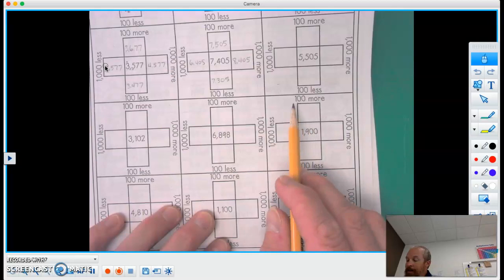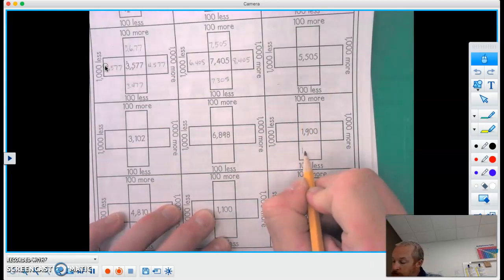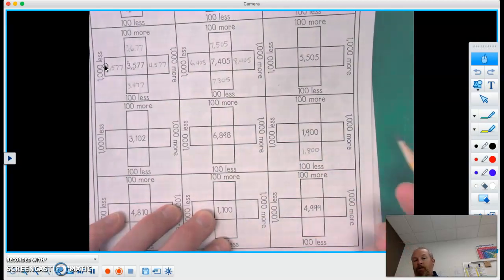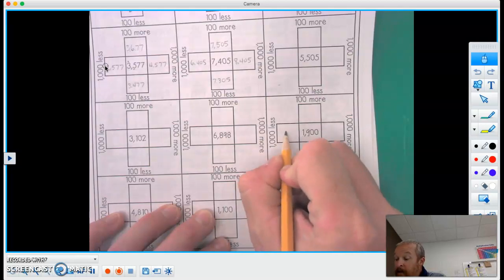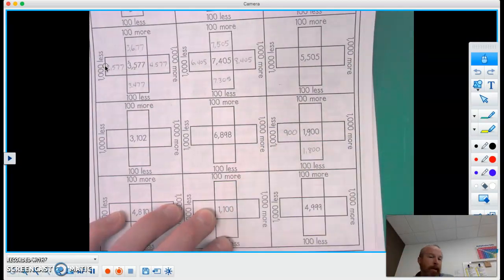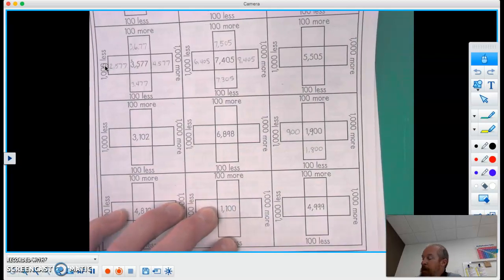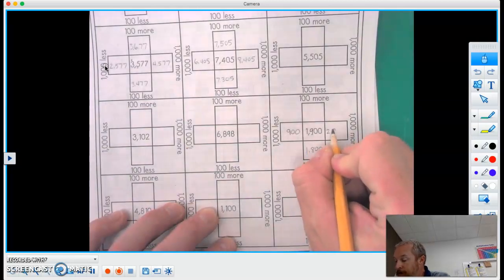So let's go 100 less than 1,900. So that's 1,800. And we can do 1,000 less. 1,000 less would be just 900. We're not going to write a zero down in there, right? We don't need to do that. So we'll just write 900. And then 1,000 more would be 2,900.